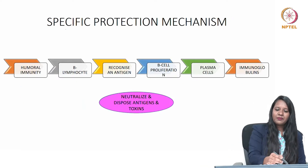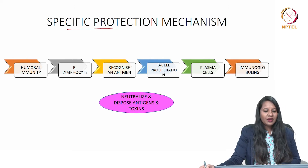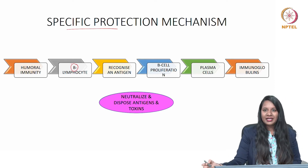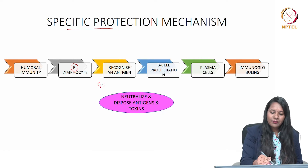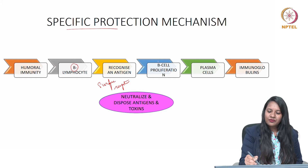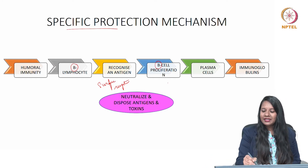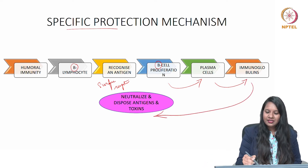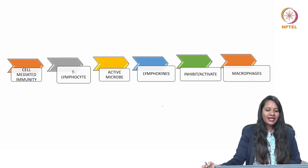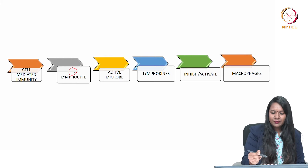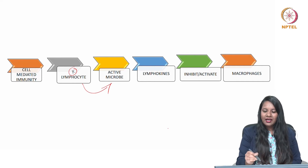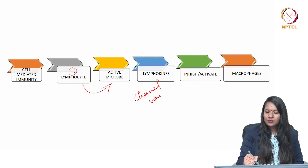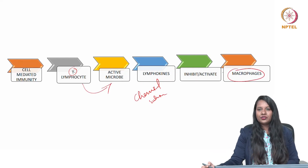Then comes the specific protection mechanism, which involves humoral and cell-mediated immunity. Humoral immunity is mediated by the proliferation of B-lymphocytes, which recognize an antigen with the help of surface receptors, leading to B-cell proliferation, plasma cell formation, and the production of immunoglobulins. The immunoglobulins will neutralize and dispose of antigens and toxins from the body. Cell-mediated immunity is mediated by T-lymphocytes, which capture active microbes in the body and release lymphokines that either inhibit or activate macrophages, leading to phagocytosis.